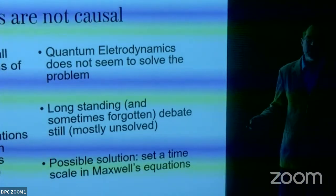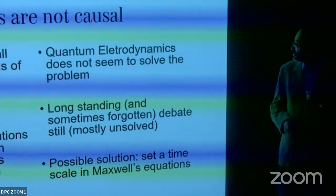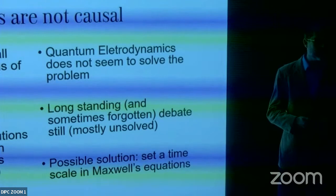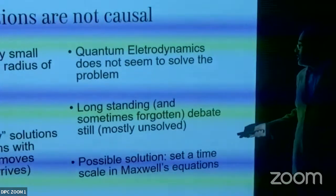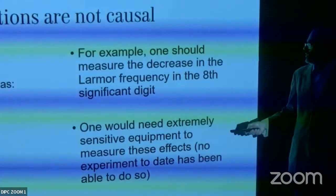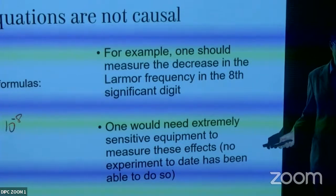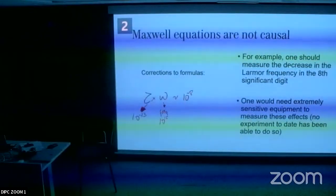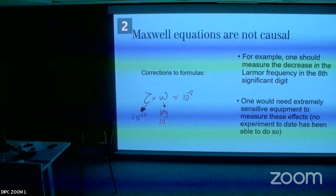This problem has existed for 120 to 150 years without a solution. Problems without solutions tend to be forgotten. There's no experimental way of measuring this because — for example, if you have a timescale of 10⁻²³ seconds and the frequency of light is 10¹⁵, this effect appears at 10⁻⁸. To measure its effect on the Larmor frequency, you'd need to measure at eight significant digits — a real experimental challenge.